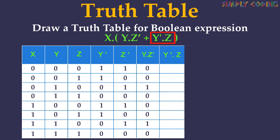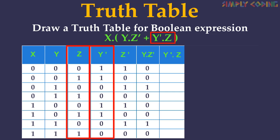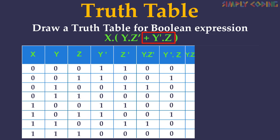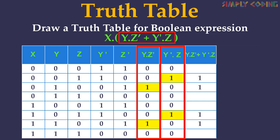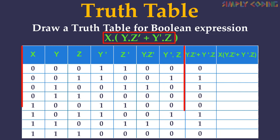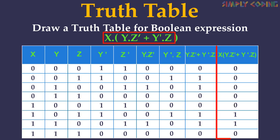We take the Y-bar and Z columns and apply AND. Only where both inputs are one is the output one; remaining are zero. Next we solve Y·z̄ + ȳ·z. We take both columns and since this is OR, the output will be one if any input is one. Now we need to AND this result with X. We take the X column and this column and apply AND — only if both inputs are one is the output one. This is the answer for this expression.